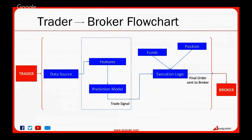The trading signal looks like: 'Asset X is currently a buy.' Once that runs through execution logic, you get the final trading action, which looks like: 'Buy asset X at this price for $500,000.' This is the final information sent to your broker.